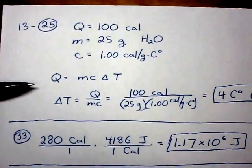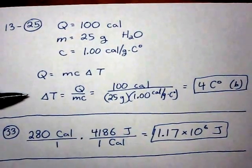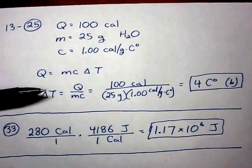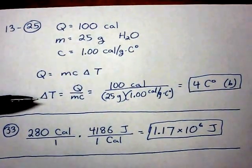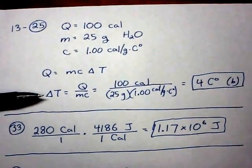So if we start with Q equals MC delta T, we solve for delta T equals Q over MC. So 100 calories divided by 25 grams divided by 1 calorie per gram Celsius degree, and we get 4 Celsius degrees.